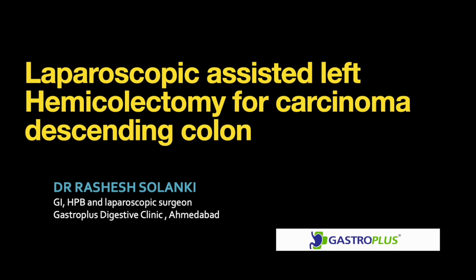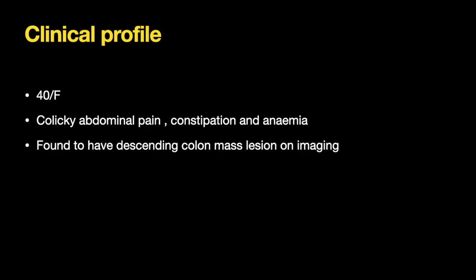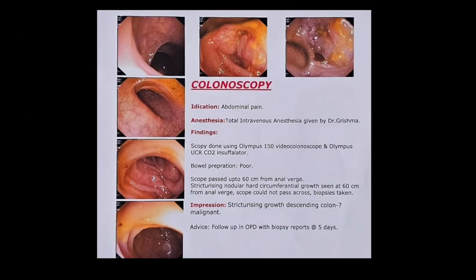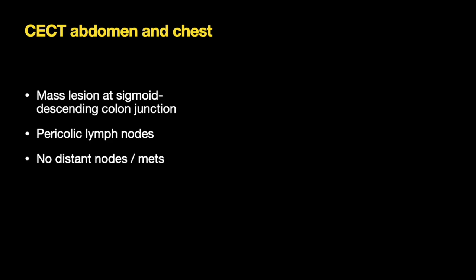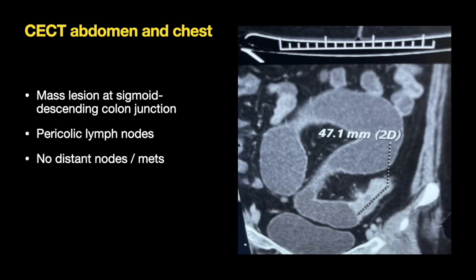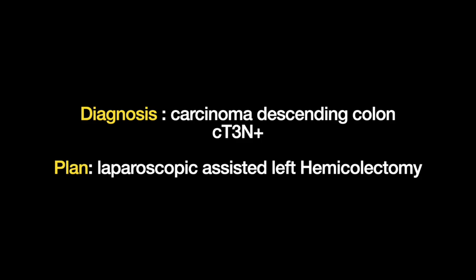Hello everyone, I am Dr. Roshesh Solanki and I bring greetings from Gastroplus Digestive Disease Hospital, Ahmedabad. The patient is a 40-year-old female with colicky abdominal pain, constipation and anemia, who on evaluation was found to have a descending colon mass lesion on imaging. Colonoscopy showed a descending colon stricturizing mass lesion and biopsy confirmed adenocarcinoma. CT abdomen and chest done for resectability and staging showed pericolic lymph nodes with no distant metastases. The diagnosis was carcinoma descending colon cT3N+ and the plan was to do a laparoscopic assisted left hemicolectomy.